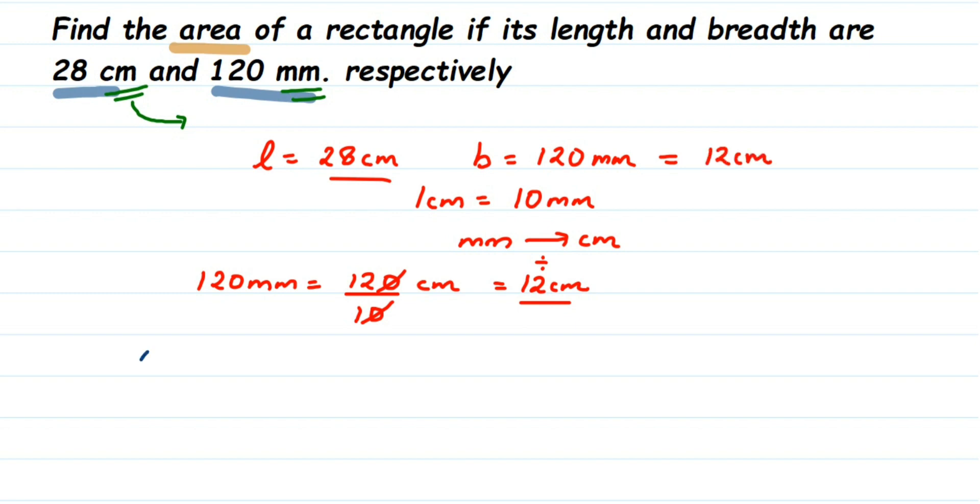So what is area of rectangle formula? It is length into breadth. So area of rectangle is equal to length into breadth. So multiply. Length is 28. So 28 cm multiplied by breadth is 12, 12 cm. Now multiply 28 and 12. I am not multiplying and showing you. You can multiply and you can check the answer here. Your answer will be 336 cm square.